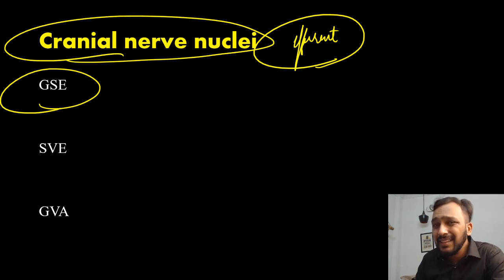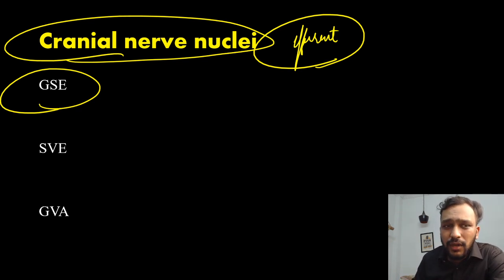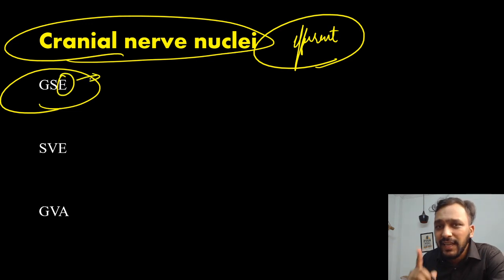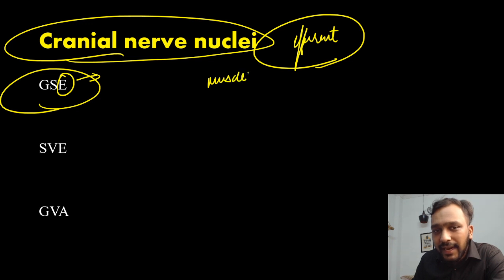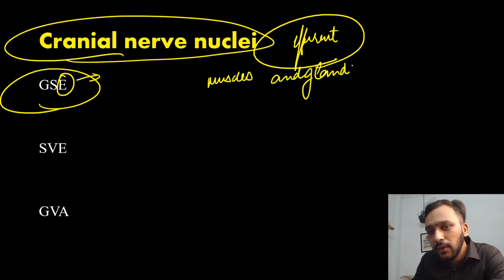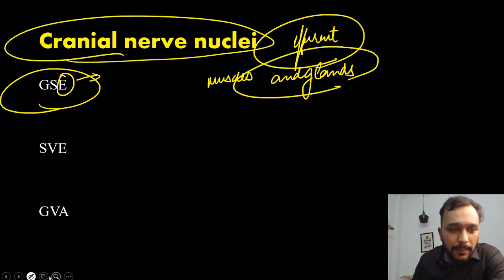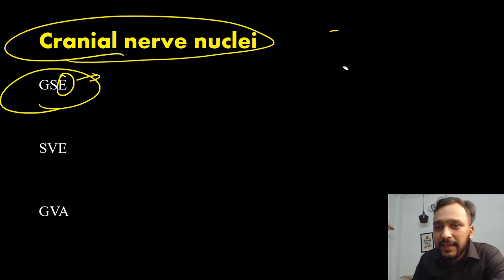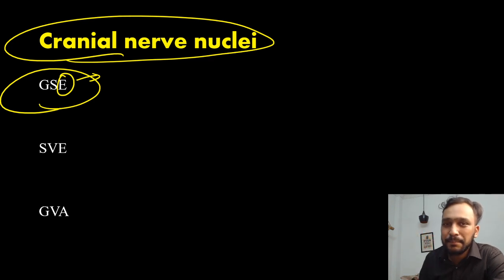So guys, you don't have to memorize which nerves have which part of the cranial nerve nuclei — you have to understand it. When I talk about efferent, I am talking about the muscles and the glands of the body. And when talking about muscles, the cranial nerve nuclei are going to supply the muscles of the head and neck.